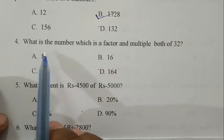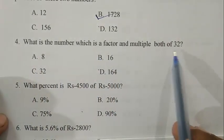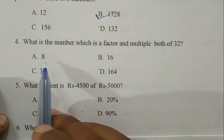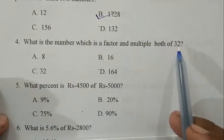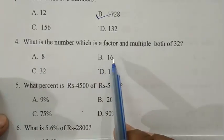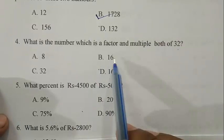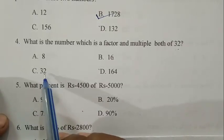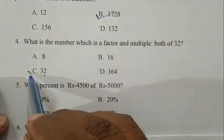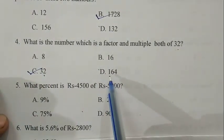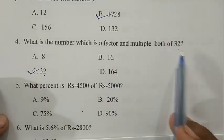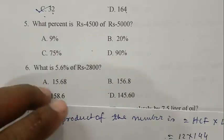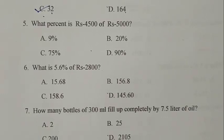Question number four: what is the number which is factor and multiple both of 32? We know that 8 is a factor of 32 but it is not multiple of 32. If we take 16, it is the factor of 32 but not multiple of 32. 32 is factor of 32 and it is also multiple of 32. So C is the right answer. If we take D, it is 164, it is not factor of 32, it is multiple of 32. So C is the right answer.